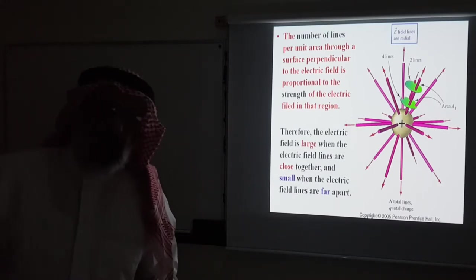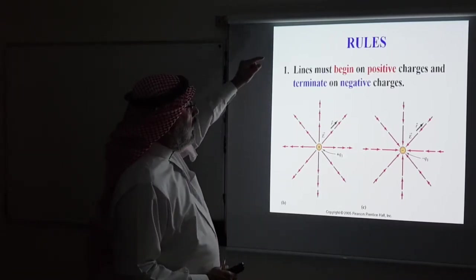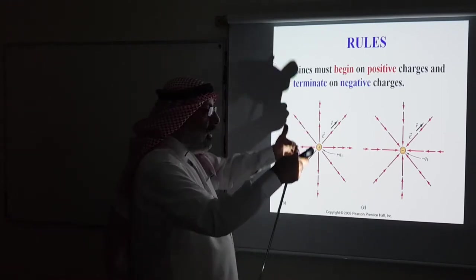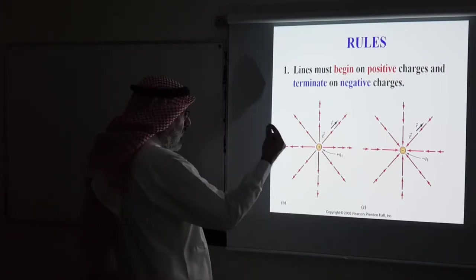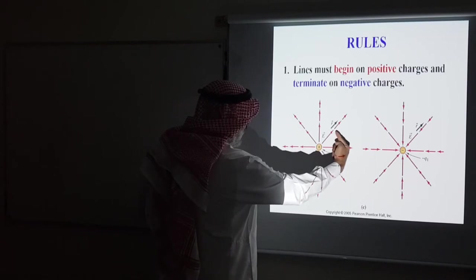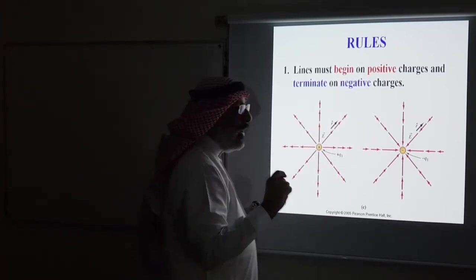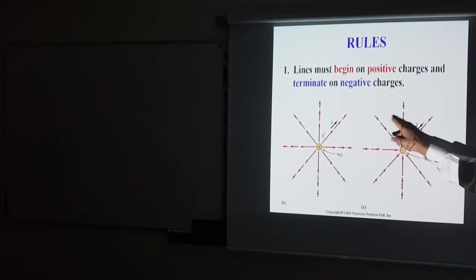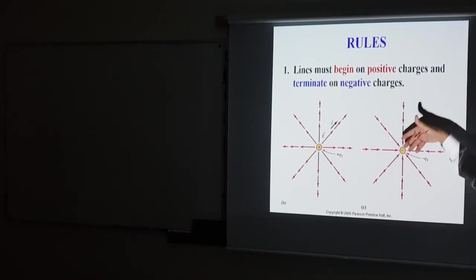Now let's look at rules for electric field lines. Rule one concerns direction: electric field lines must emerge from positive charges and terminate on negative charges. If a positive test charge is placed near a positive source charge, it is repelled away — that's the direction of the electric field. If placed near a negative charge, the positive test charge is attracted toward it, so the electric field points toward the negative charge.